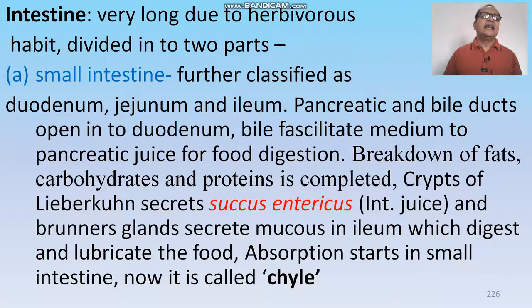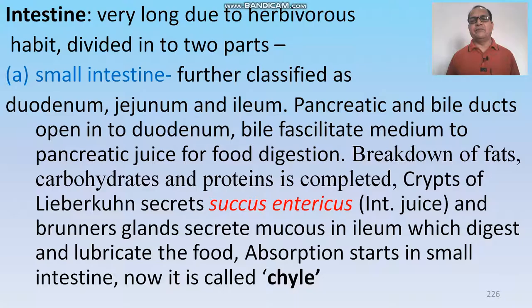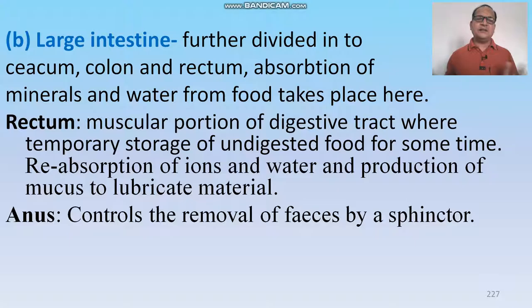The intestine is very long in herbivorous animals. The intestine is divided into small intestine and large intestine. The small intestine is further classified into duodenum, jejunum, and ileum. Pancreatic and bile ducts secrete bile juice into the duodenum; bile juice facilitates the action of pancreatic juice for digestion. Breakdown of fat, carbohydrate, and protein is completed in the duodenum. Crypts of Lieberkühn secrete succus entericus (intestinal juice) and Brunner's glands secrete mucus in the ileum, which digest and lubricate food. Absorption starts in the small intestine, and the absorbed food is now called chyle.